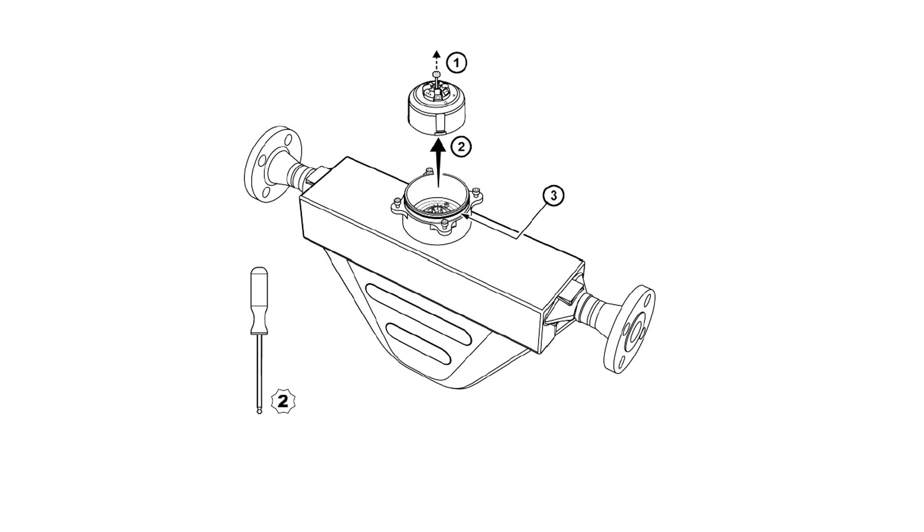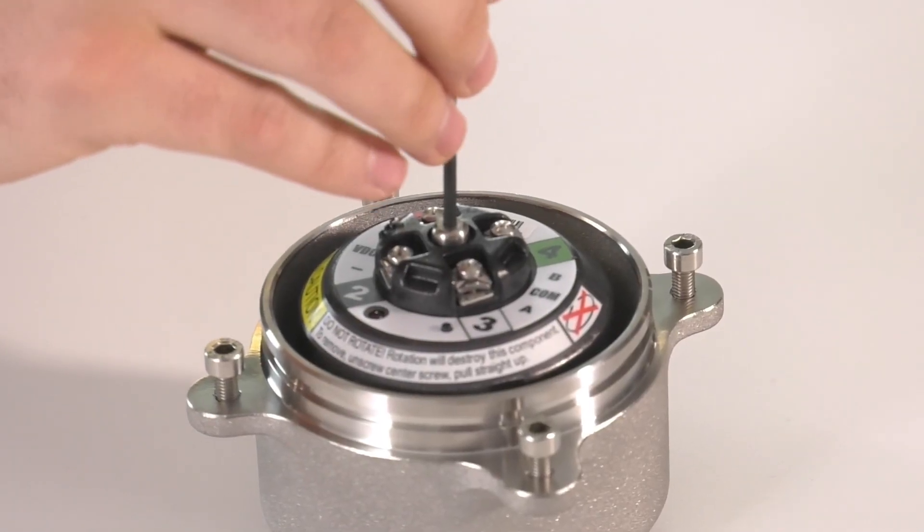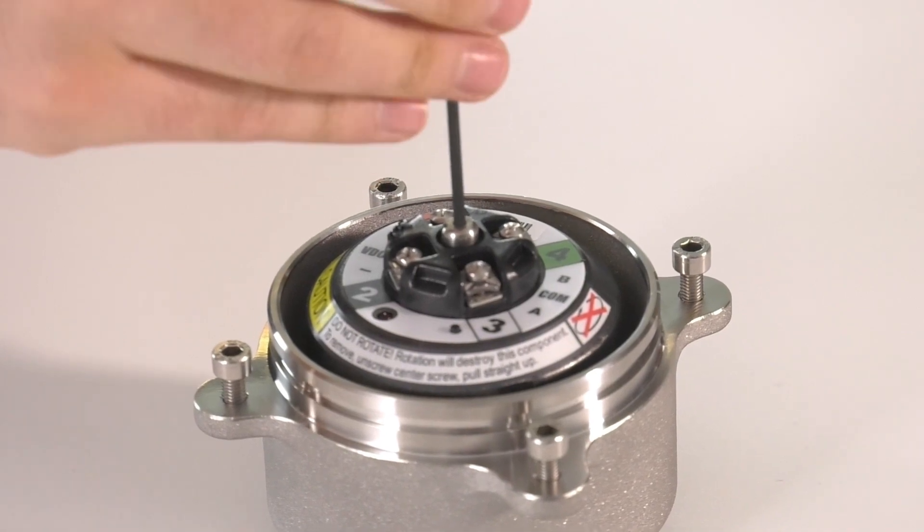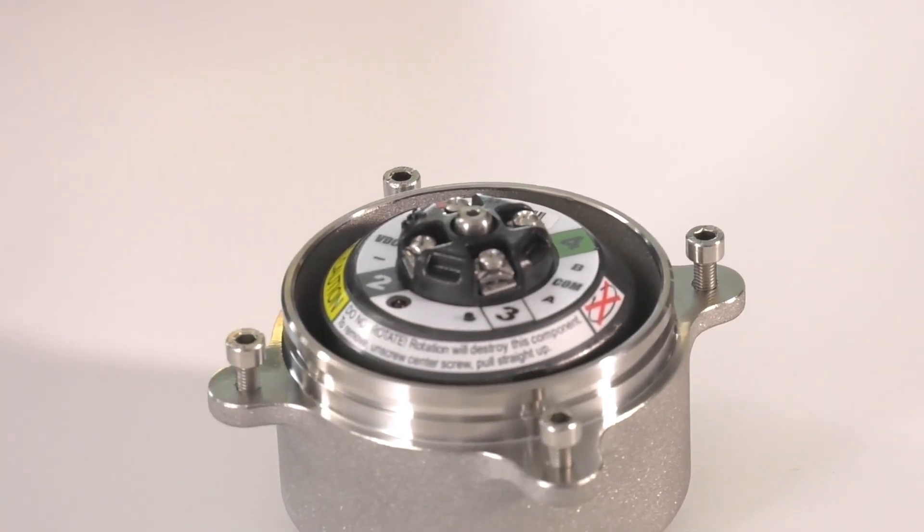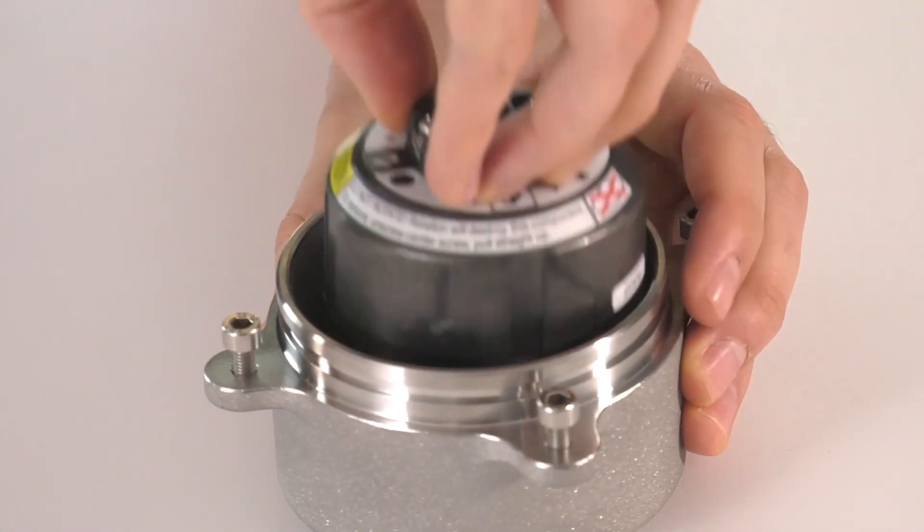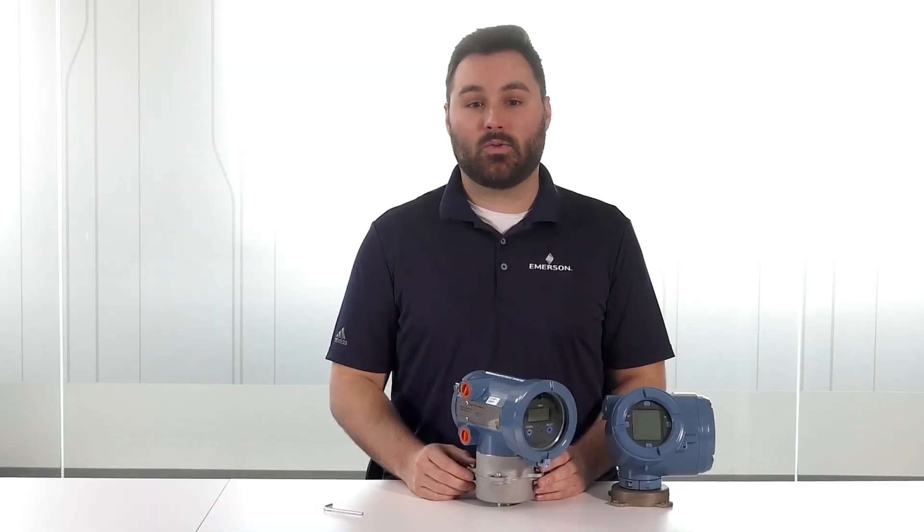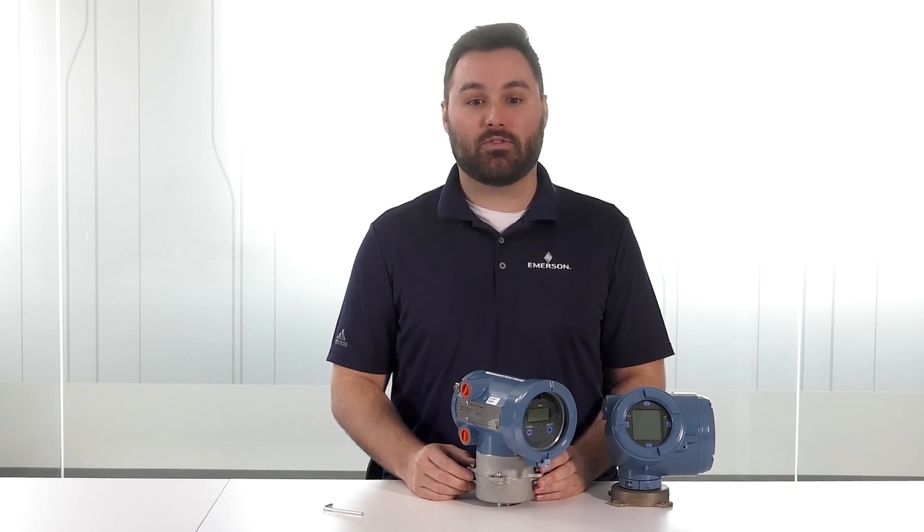Next, we will remove the 700 standard core processor. First, loosen the center core processor with a 2.5 millimeter hex driver. After, lift the core processor up. Please note not to twist the 700 core processor when removing it from the sensor mount because it can damage the feed through pins.